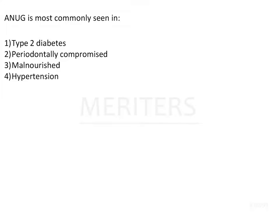ANUG is most commonly seen in type 2 diabetes, periodontally compromised, malnourished, or hypertension patients. ANUG is most commonly seen in malnourished persons, so the answer would be option 3.